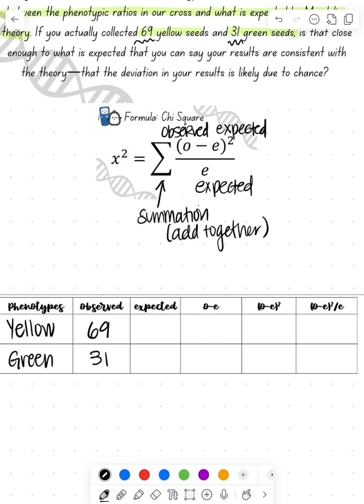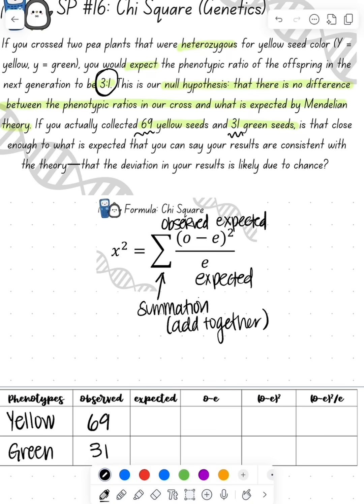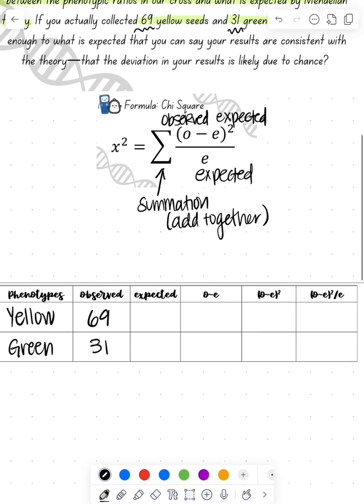If we're looking for a 3 to 1 ratio, we add these together: 69 plus 31 is 100. So we do 3/4 times 100, which is 75, and 1/4 times 100, which is 25. These are our expected values.